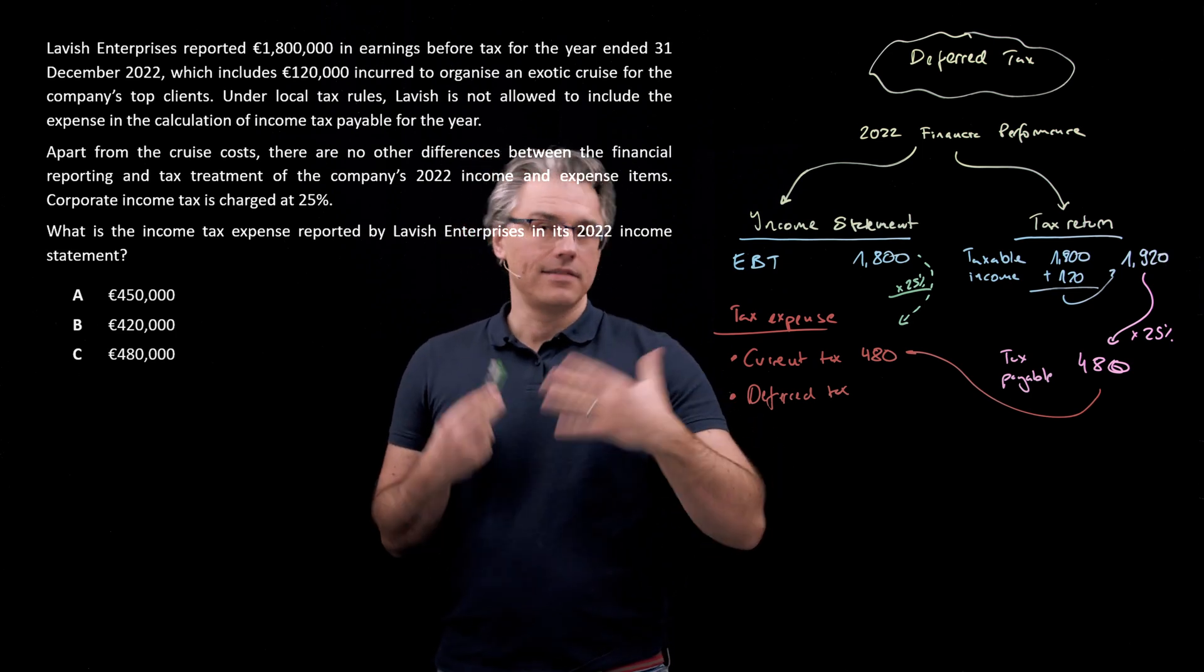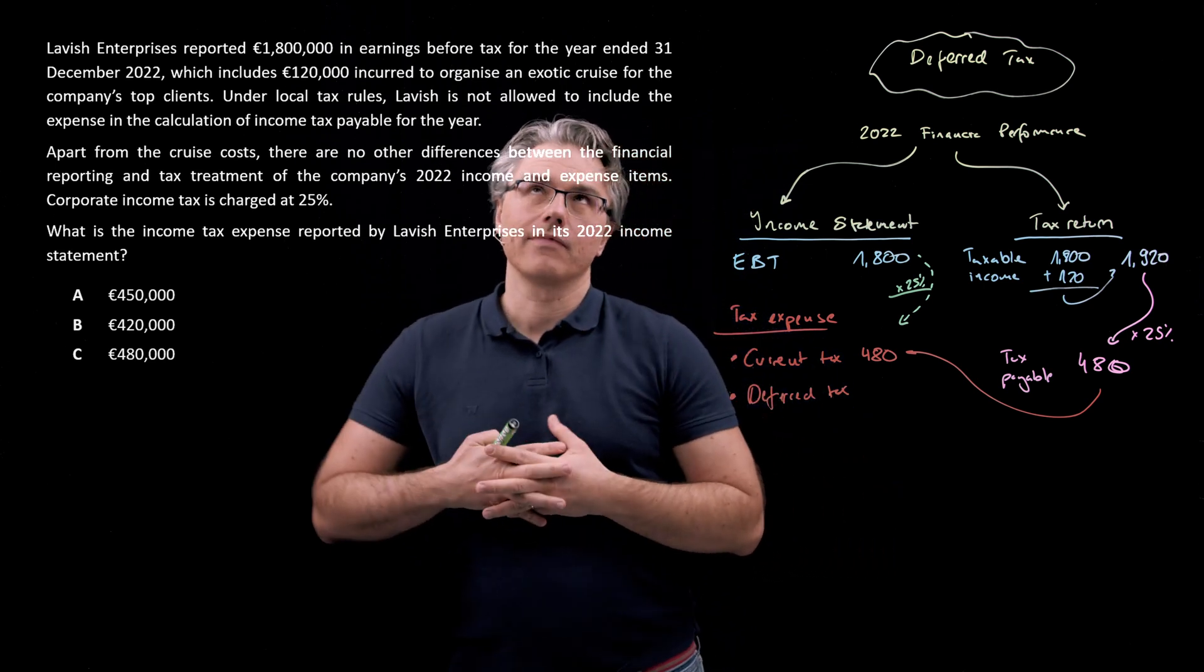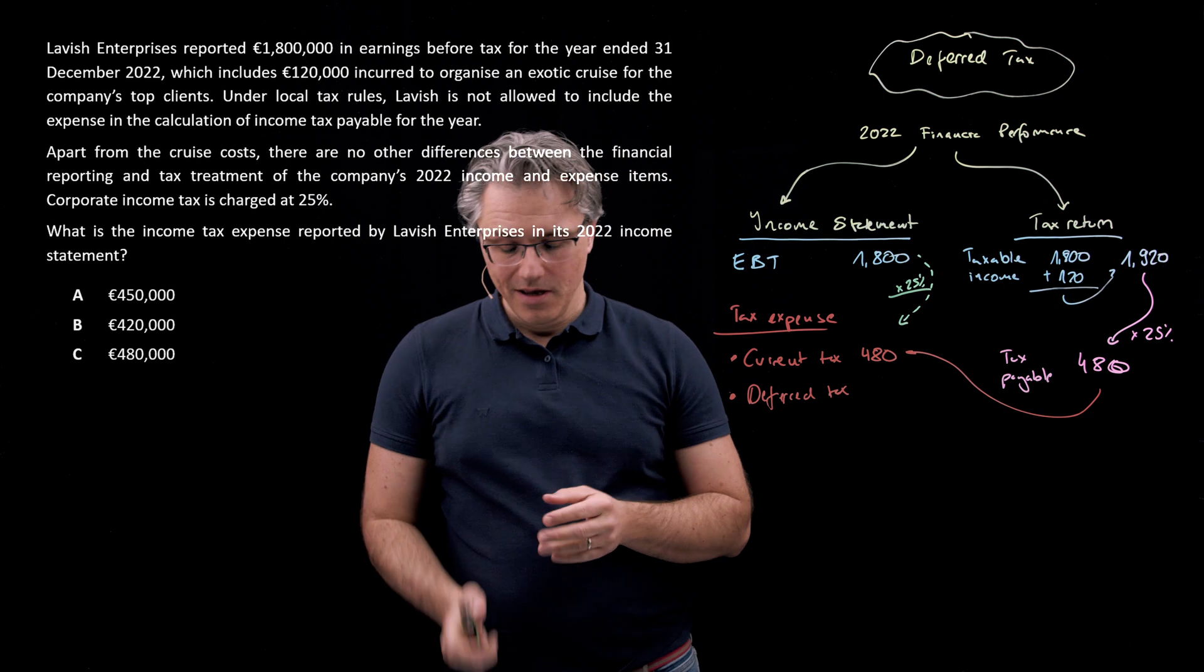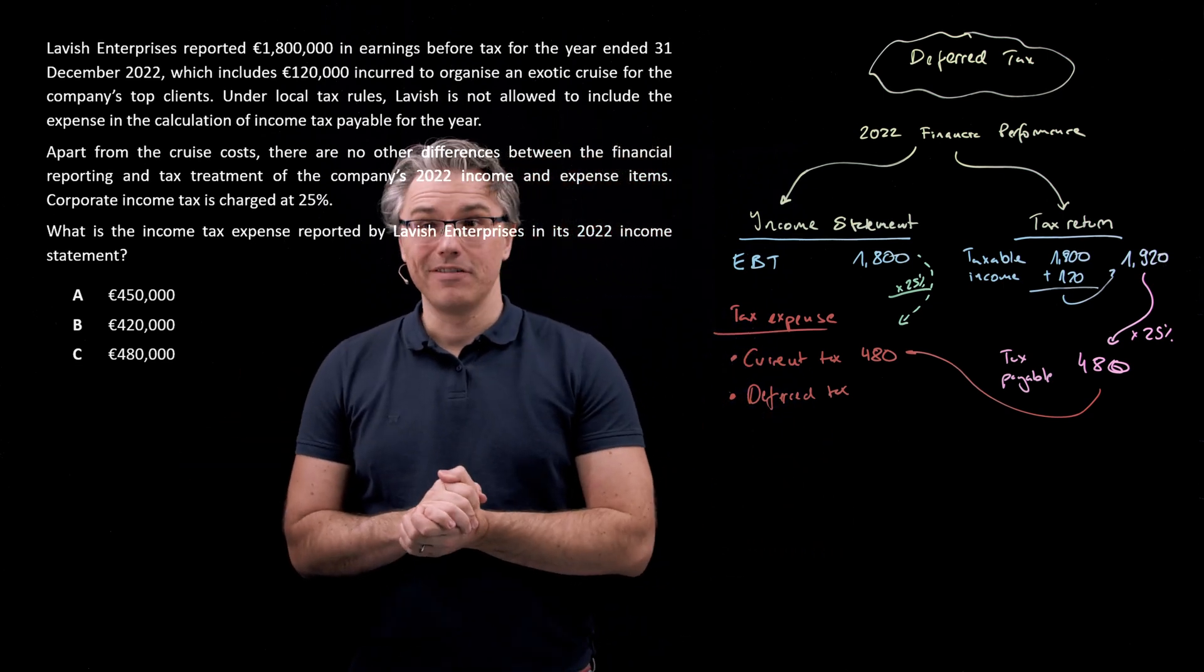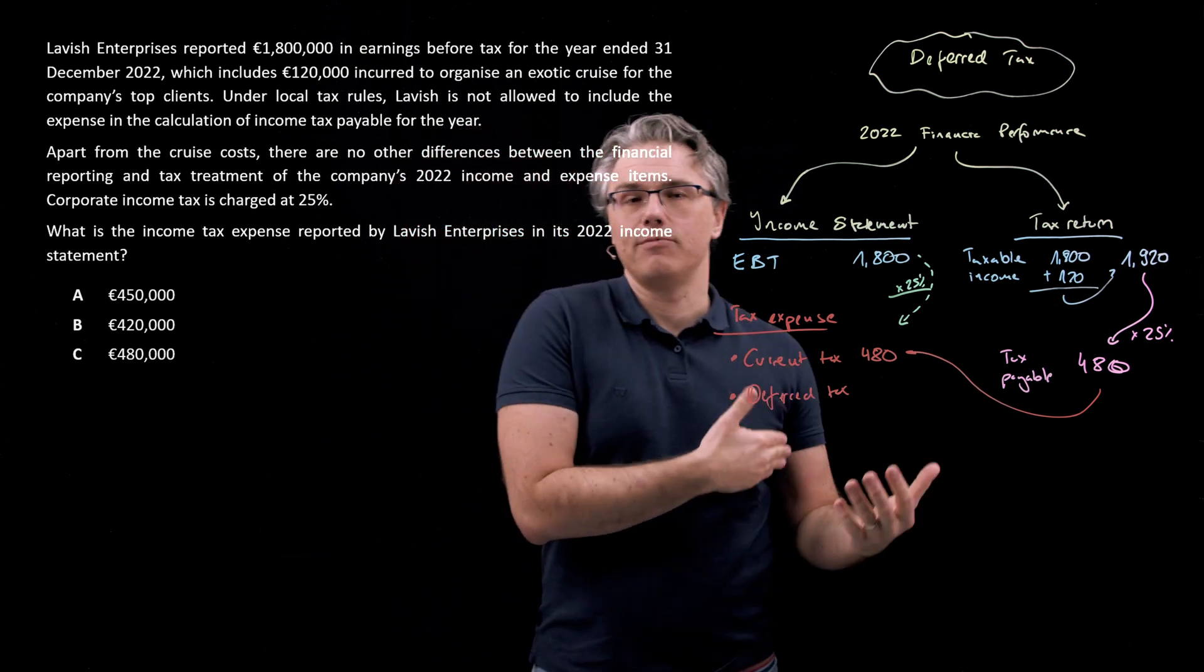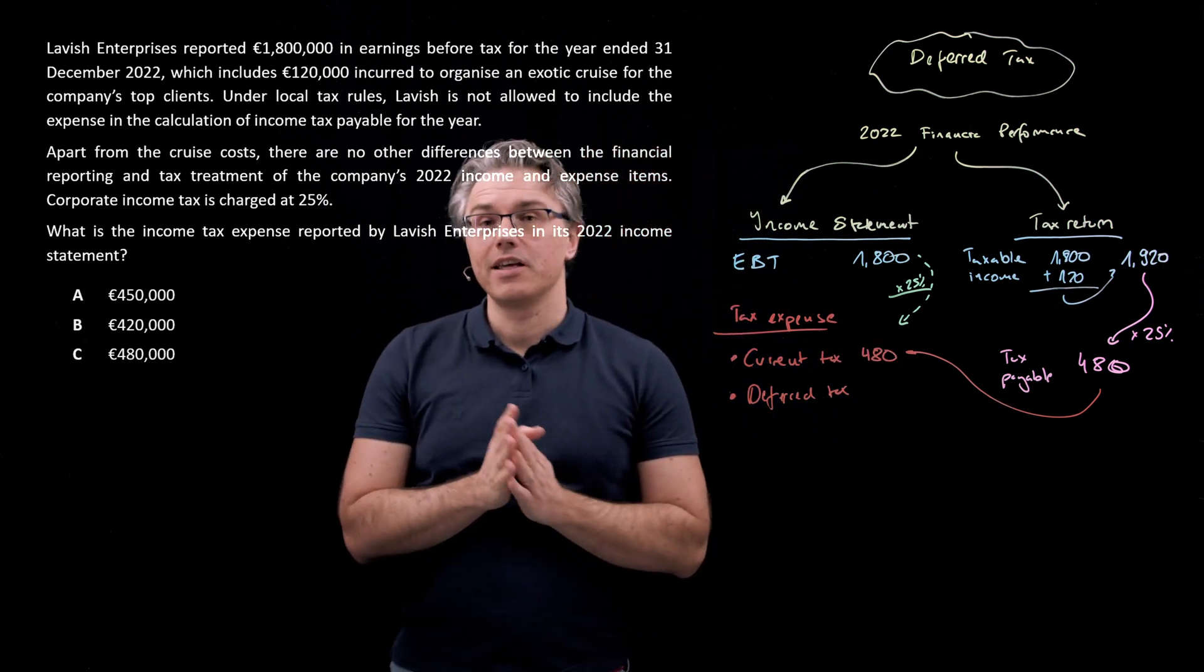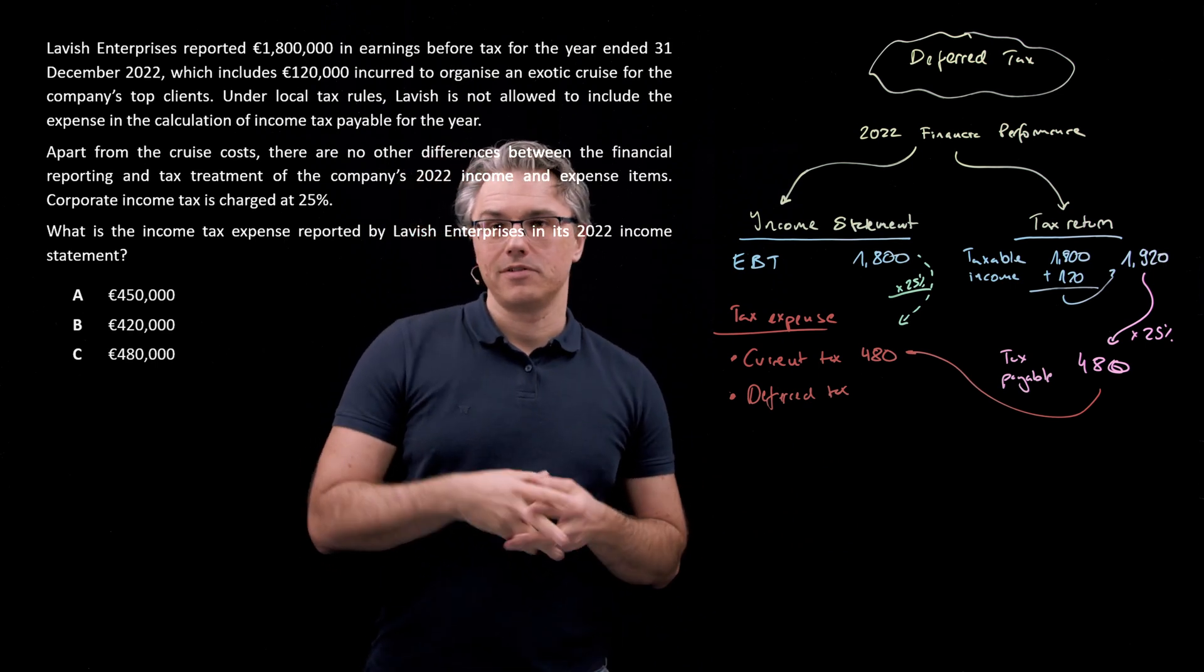But that was the case in those previous videos because we were dealing with so-called temporary differences. There was a temporary one year difference between when a certain expense was allowed for tax purposes and when it should have been reported in the financial statements. In the very first two videos, we had an interest expense which was allowed for tax purposes one year after it had been treated as a cost for financial reporting.